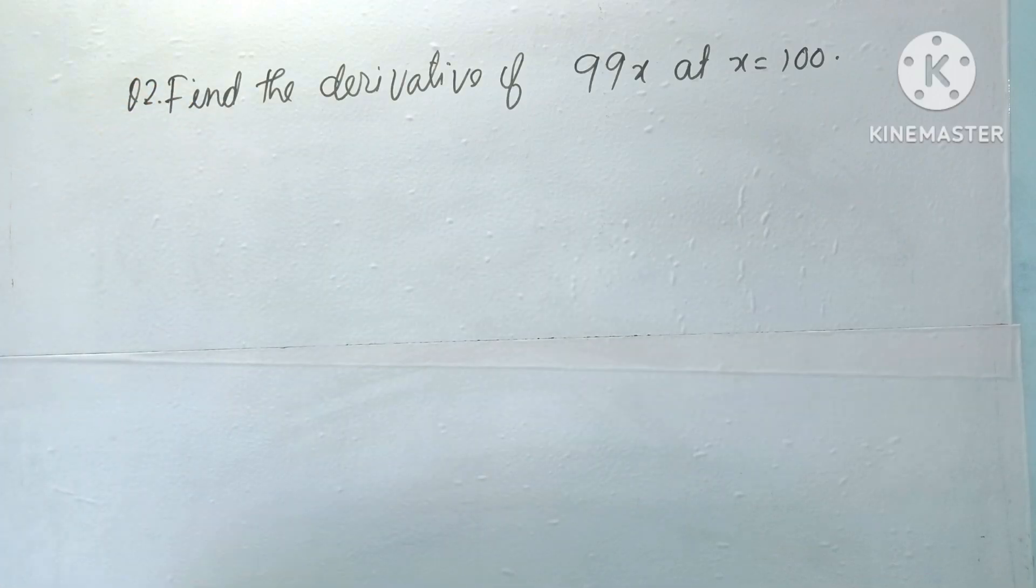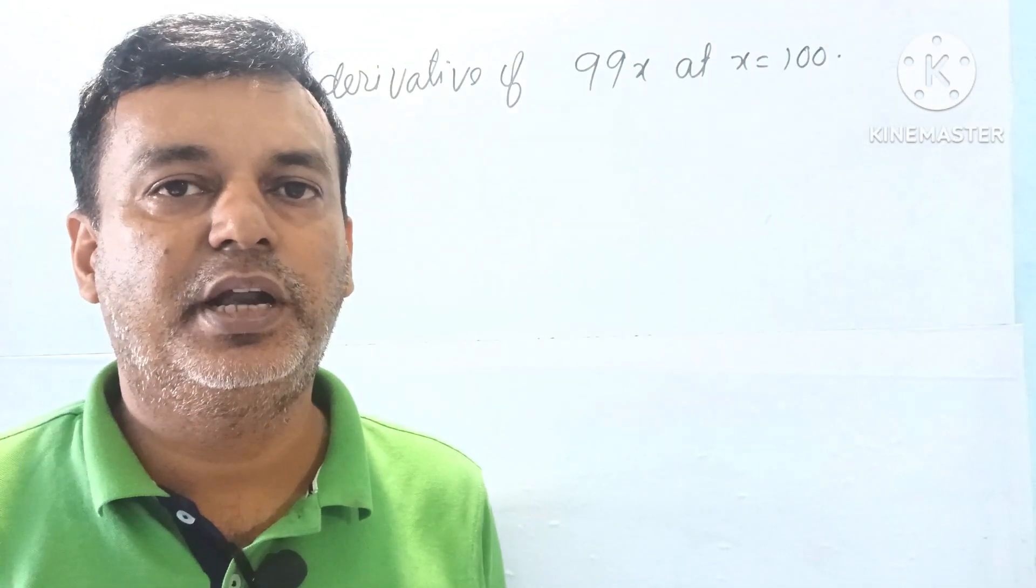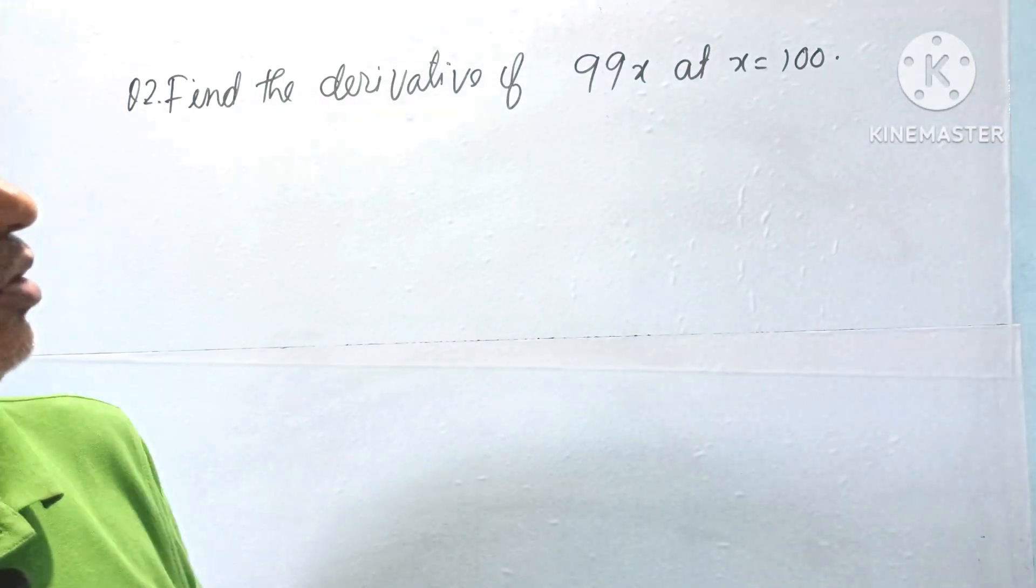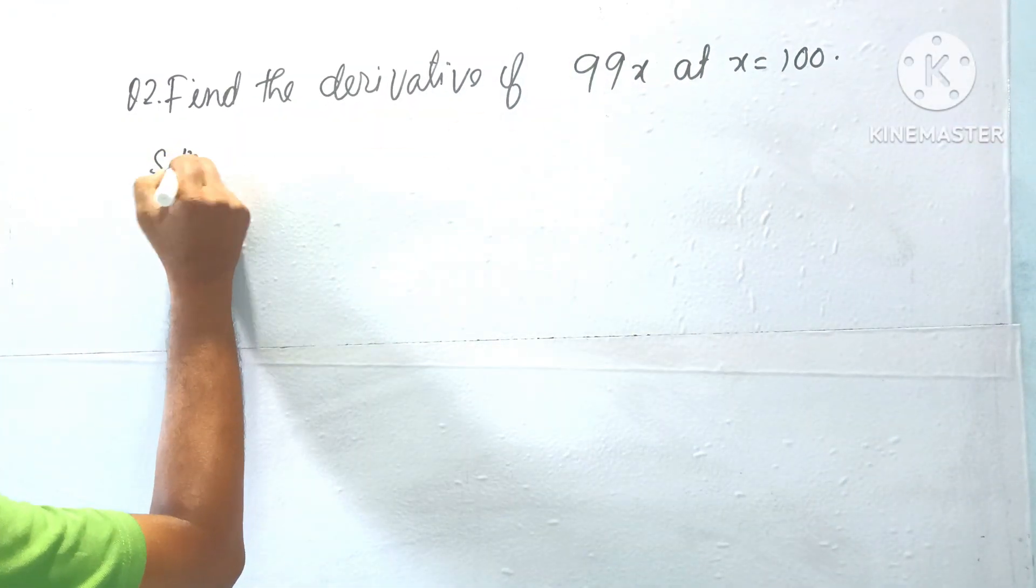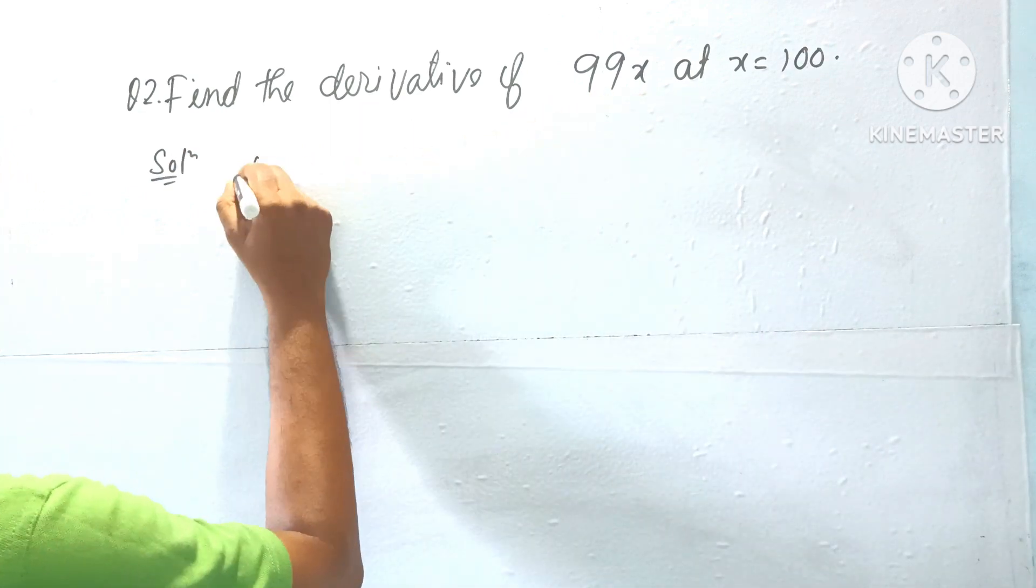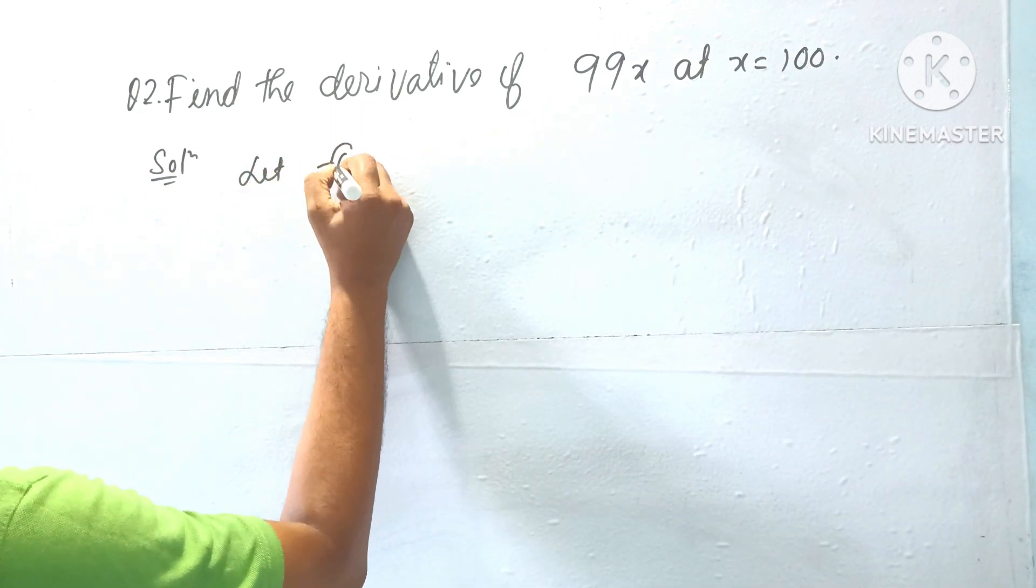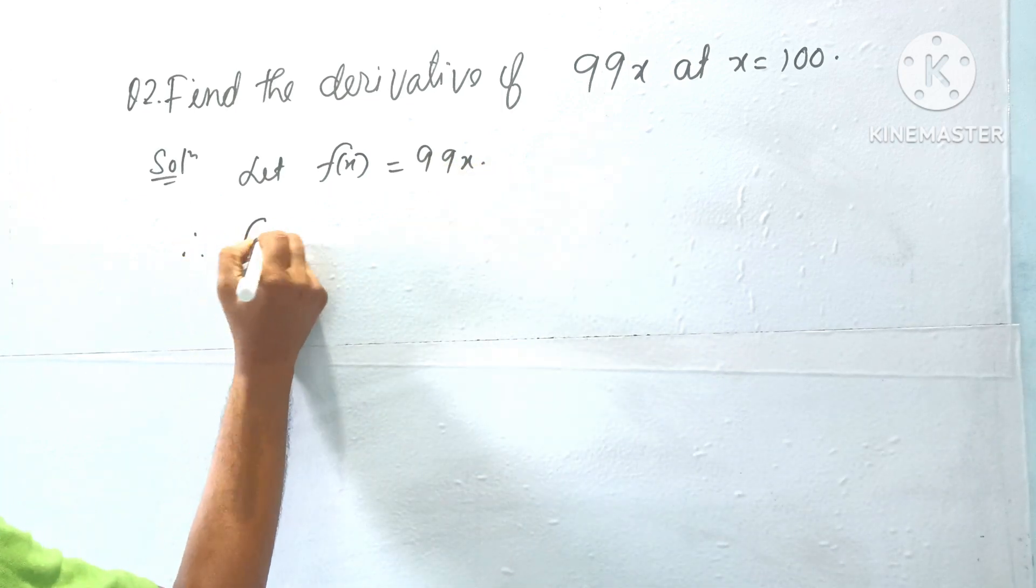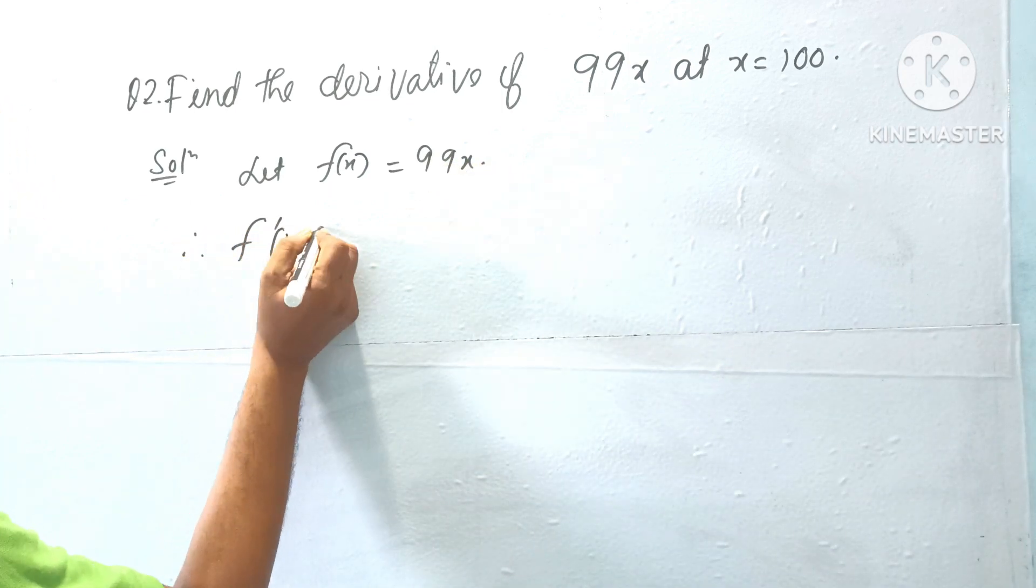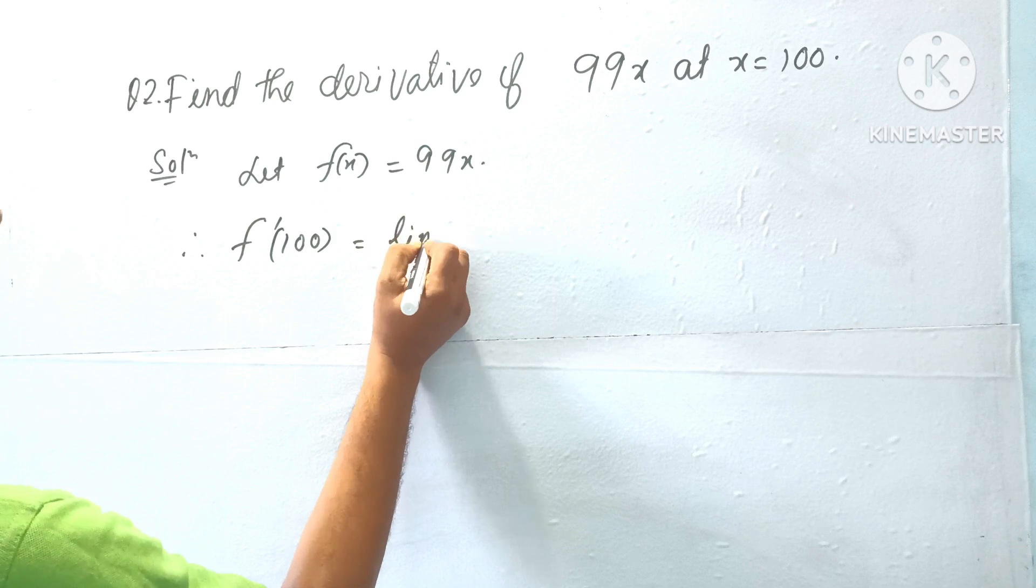Question number two: Find the derivative of 99x at x equal to 100. Solution: You have a function f(x) equal to 99x. Therefore, f dash of 100, that is equal to limit h tends to 0...